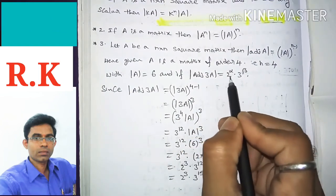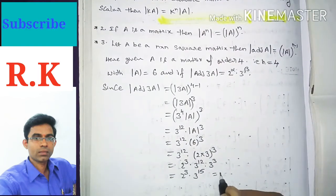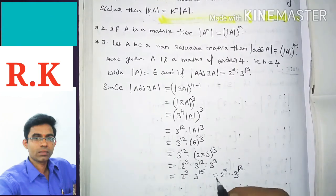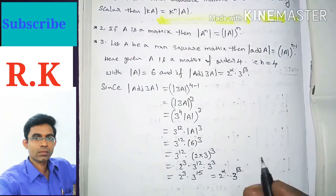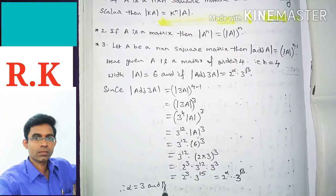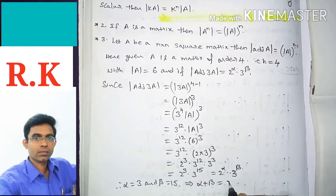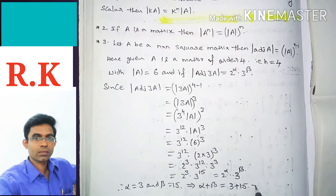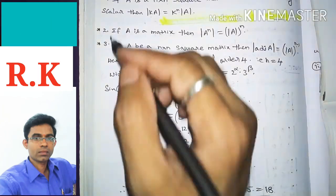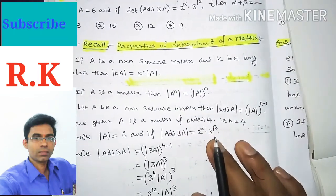Given that det(adj(3A)) equals 2^alpha times 3^beta, comparing with our result 2^3 times 3^15, we get alpha equals 3 and beta equals 15. Therefore alpha plus beta equals 3 plus 15, which equals 18. So option number 1 is correct. I hope you like this video.